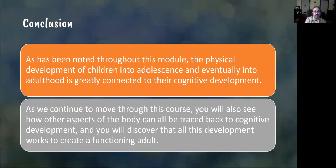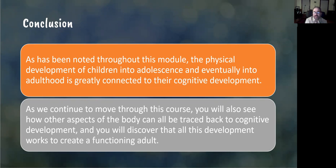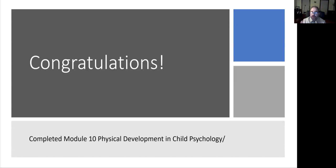In conclusion, as you have noted throughout this module, the physical development of children into adolescence and eventually into adulthood is greatly connected to their cognitive development. Physical development and cognitive development play together. As we continue throughout this course, you will also see how other aspects of their body all trace back to cognitive development, and you will discover that all of this development works to create a functioning adult. Congratulations to all of you for completing module number 10 — physical development in child psychology. My name is Nadeem Sikander. Hope to talk to all of you soon in the next module, number 11. Thanks very much for watching.